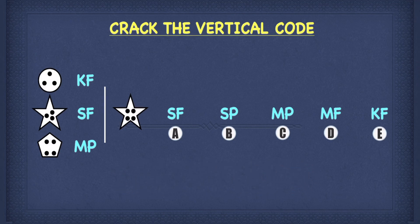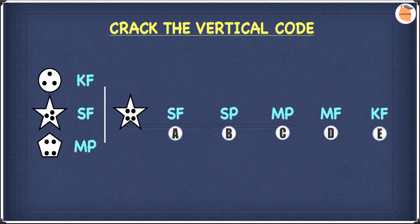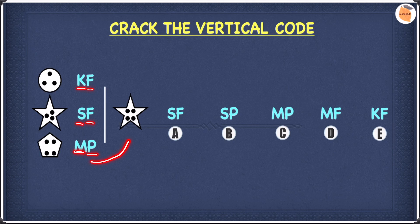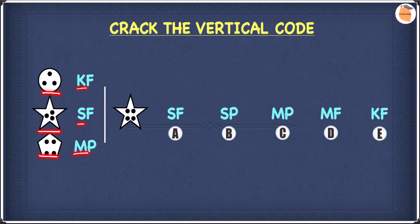Let's have a look at this example. In this example we have three shapes and three two-letter codes. Our job is to find what each of these letters mean, and once we've done that we can use it to find the code for the shape on the right. Let's look at the first letter for each of the codes, which is K, S and M. As you can see, all three of these letters are different, so this means there is something different about all three of these shapes.